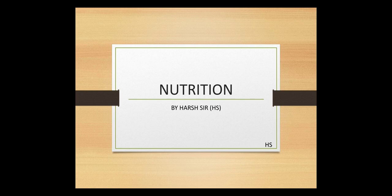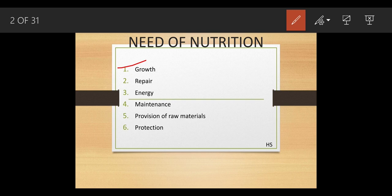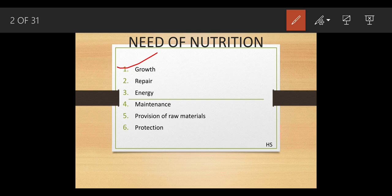We are going to discuss the needs of nutrition. It helps in growth, repair, energy, maintenance, provision of raw materials, and protection. Starting with growth: when you were a baby, your mom used to feed you a lot, because when a newborn baby gets a proper amount of nutrition, there is production of cells in the right amount. If cells keep dividing, the baby remains healthy.